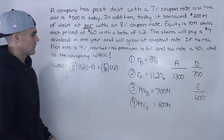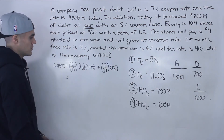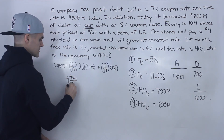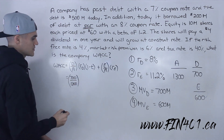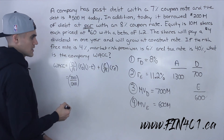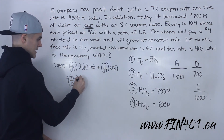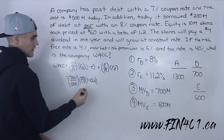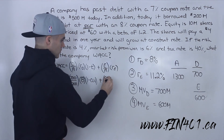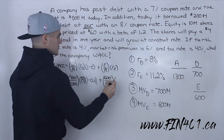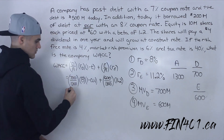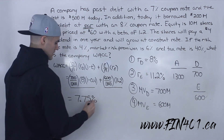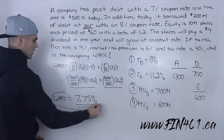Now we can find the weighted average cost of capital with the general formula. We have debt over assets: $700 over $1,300 (or just 7 over 13), times the cost of debt of 8%, times (1 minus the tax rate of 40%), so times (1 minus 0.4). Plus equity over assets: $600 over $1,300, times the cost of equity of 11.2%. Multiplying each expression and adding them, you end up getting 7.75% — that is the weighted average cost of capital.